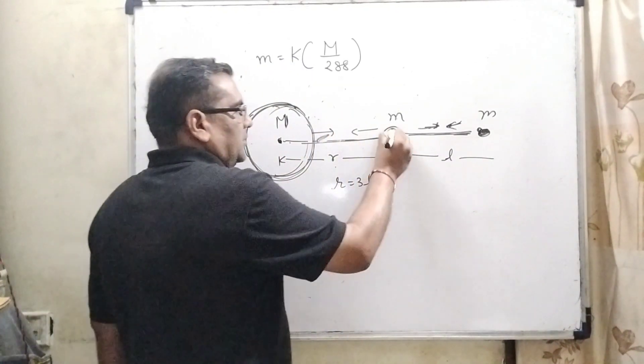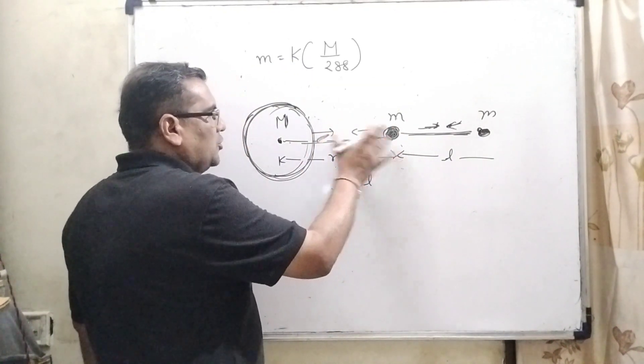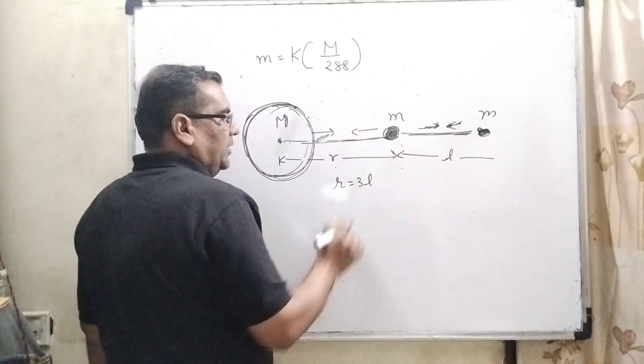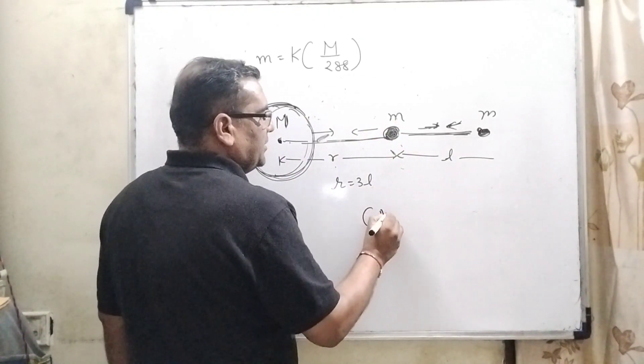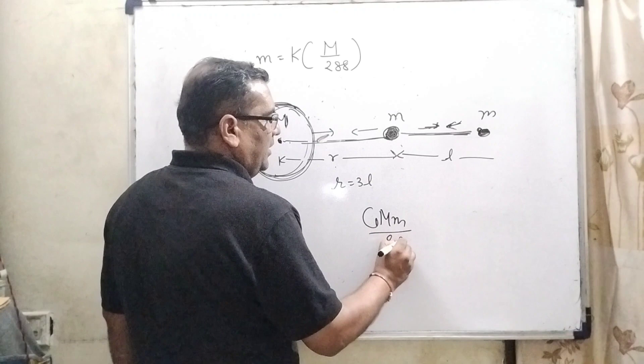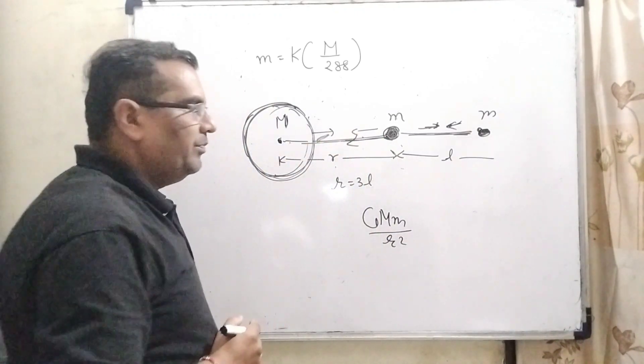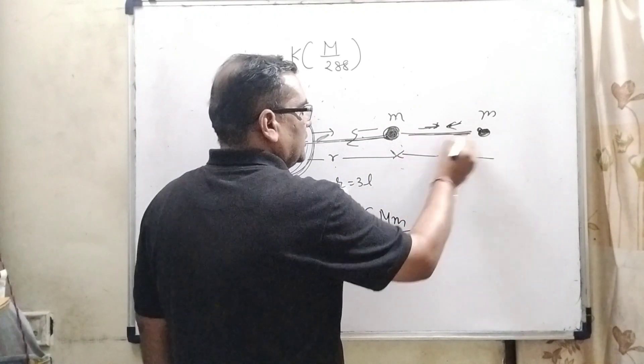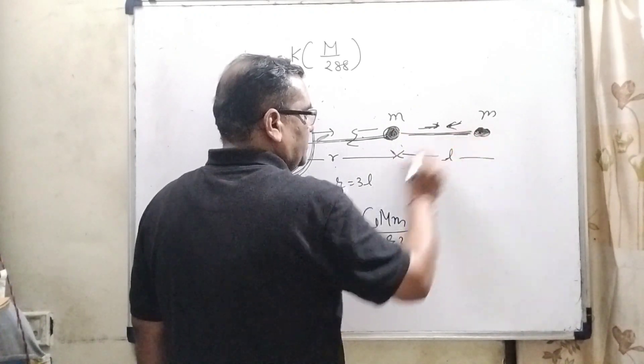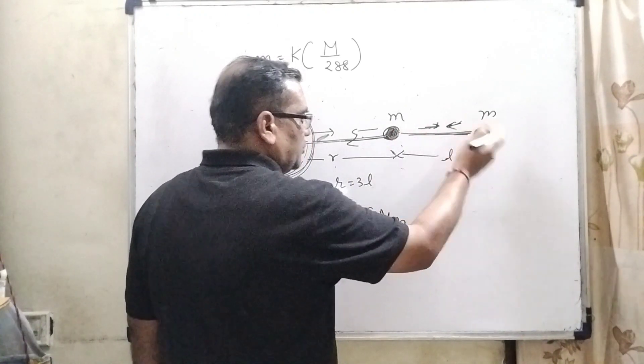Here we have to find out the attraction force between this body and this body, that is G capital M small m upon r square. Its direction is towards the bigger body. And here the smaller two point objects, the attraction force is towards the right side.